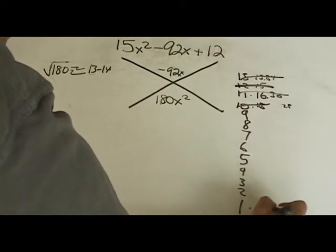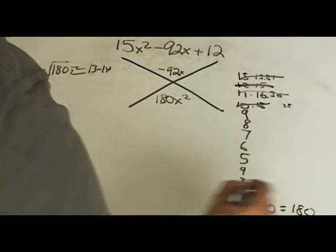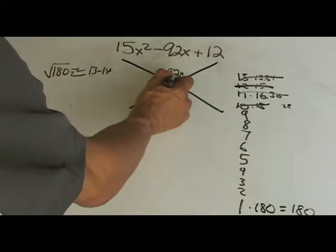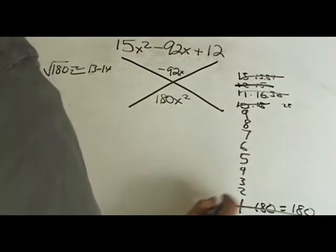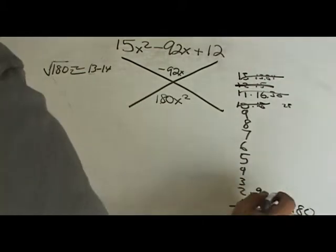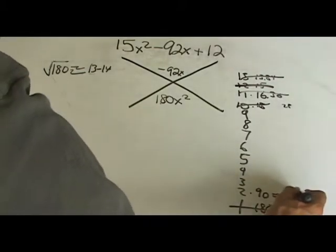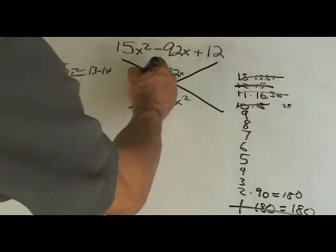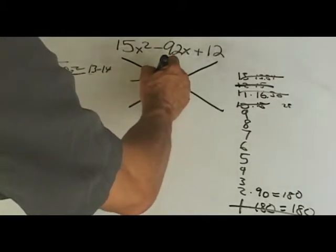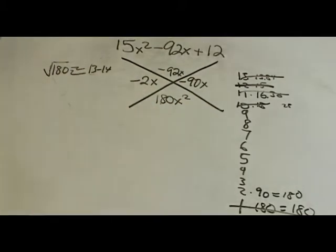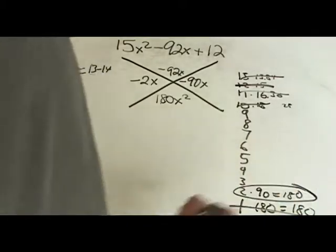And you go 1 times 180. And that equals 180. 1 plus 180 is not equal to negative 92. So that one's gone. So you go to the next one. 2 times, well, let's see, 2 times 90. I think we may have a winner. That equals 180. And negative 2 plus negative 90 equals negative 92. I think we got a winner there. Negative 2x and negative 90x add up to negative 92x. And they also multiply to equal 180x squared. So there you go. You don't even have to look at the rest of them. That's your solution.